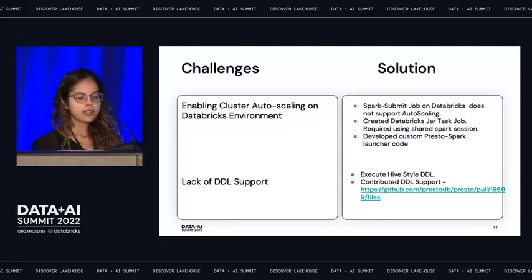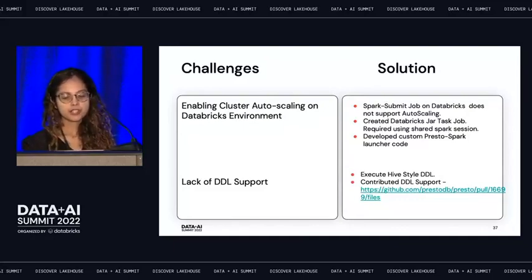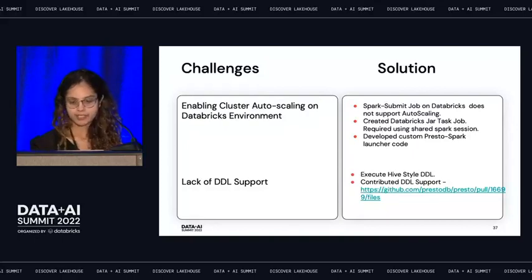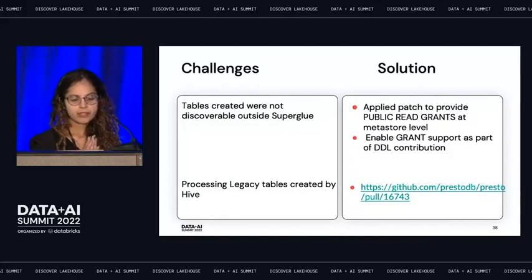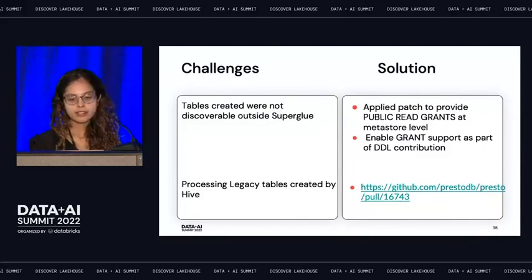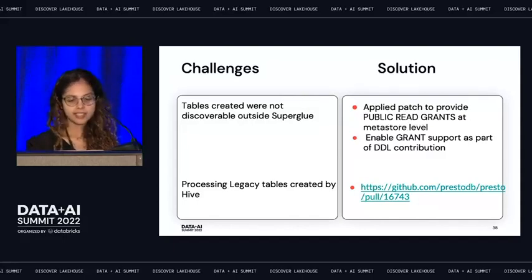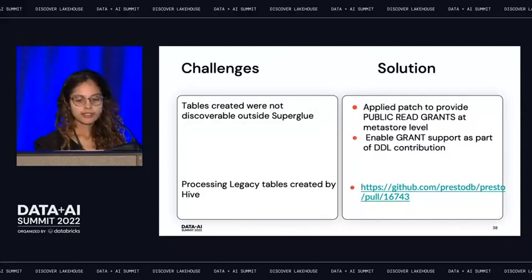Presto on Spark library does not have DDL support out of the box. We were executing Hive-style DDLs since Athena also does that, and we have contributed DDL support back to the project. Tables just created were not discoverable outside Superglue, so we applied a patch to provide public read grants. As part of the DDL support, you can now run grant statements.